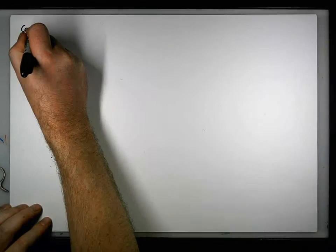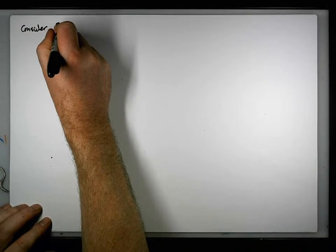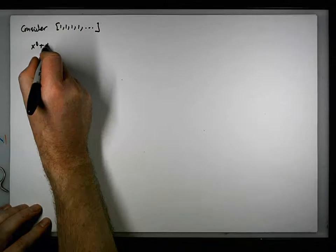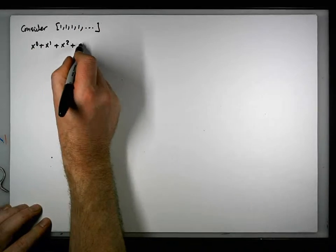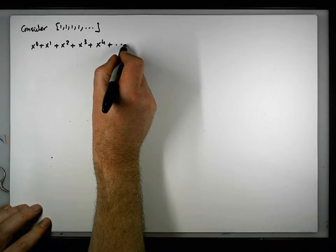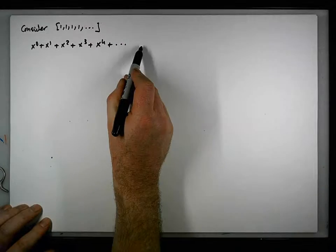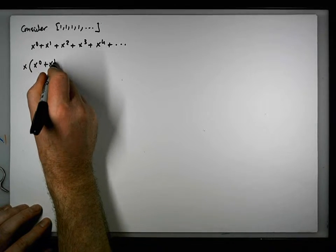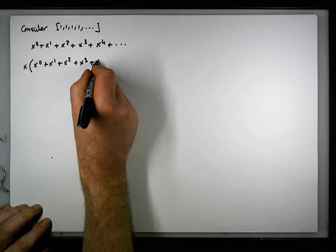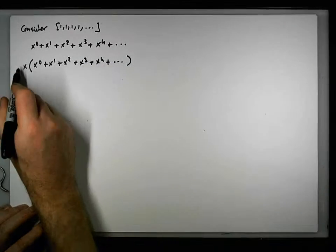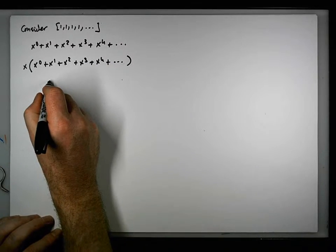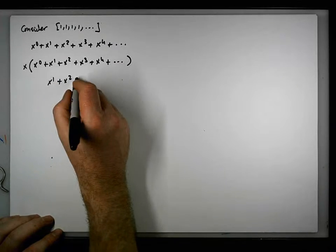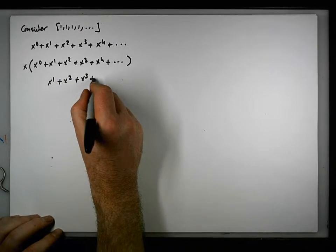Consider again 1, 1, 1, 1, … with power series x⁰ + x¹ + x² + x³ + x⁴ + … and let's multiply it by x. Then x·x⁰ = x¹, x·x¹ = x², x·x² = x³, x·x³ = x⁴, and so on.